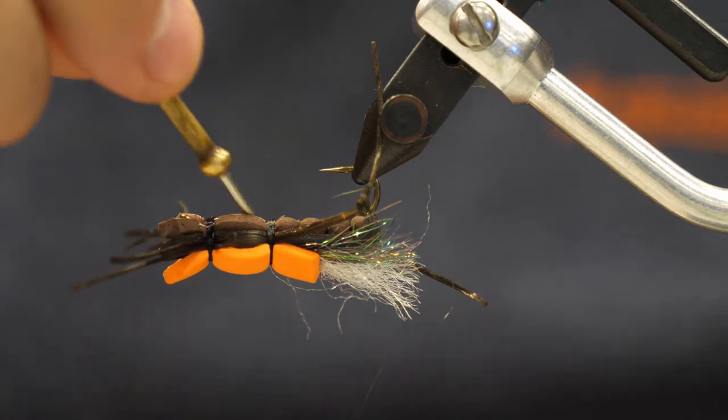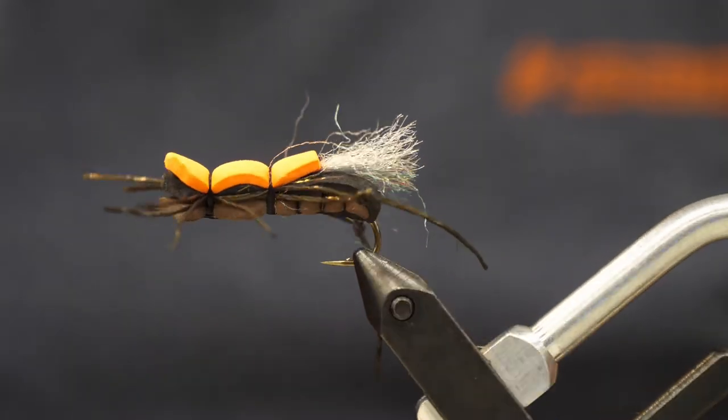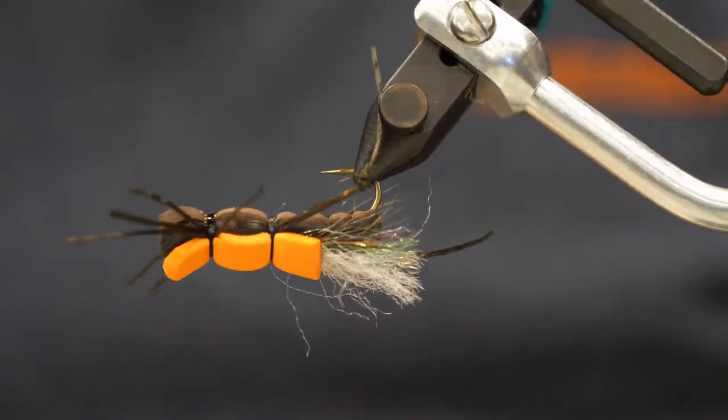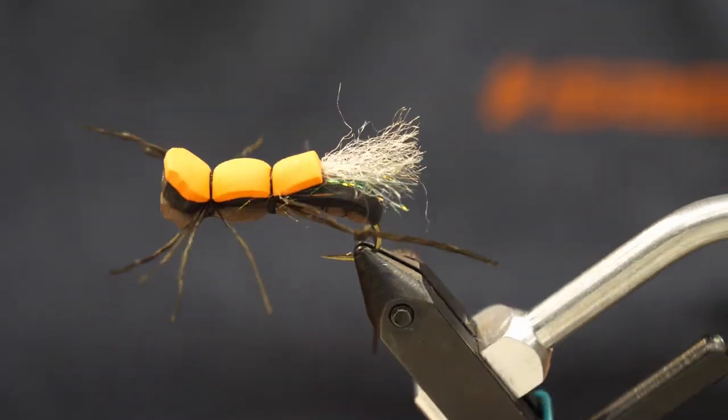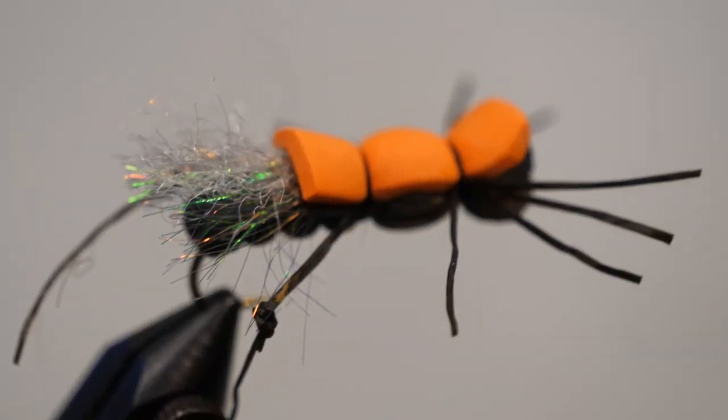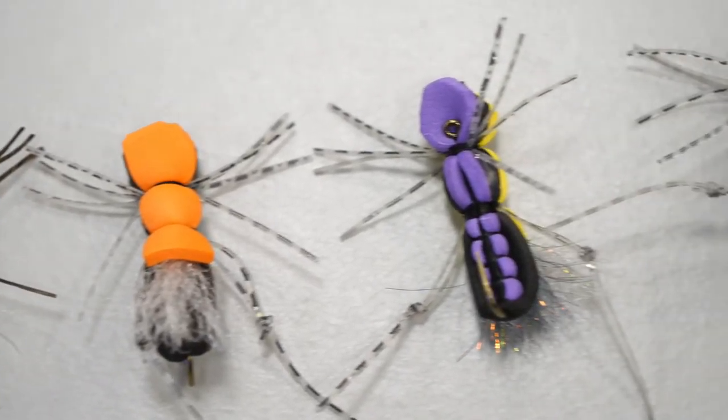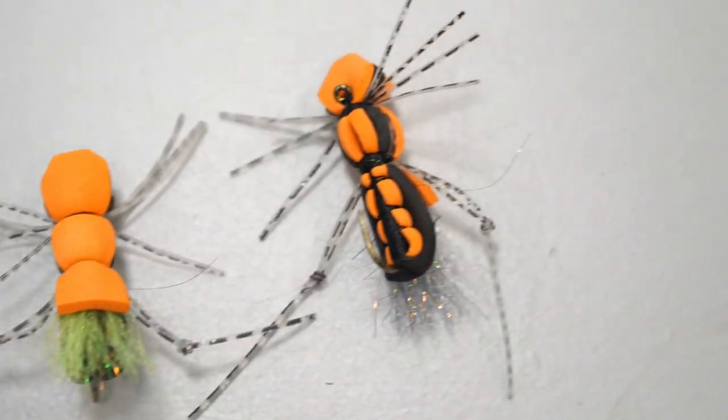Now this is a great high flotation bug. It's fantastic for hopper dropper rigs. This is very similar to a commercial tie where it's a little bit fatter, but actually I find that a lot of anglers prefer to tie this fly a little bit skinnier and a little bit smaller, and that seems to work well. You can play with many different colors and patterns, and it's a really effective hopper pattern. Hope you guys enjoyed that.